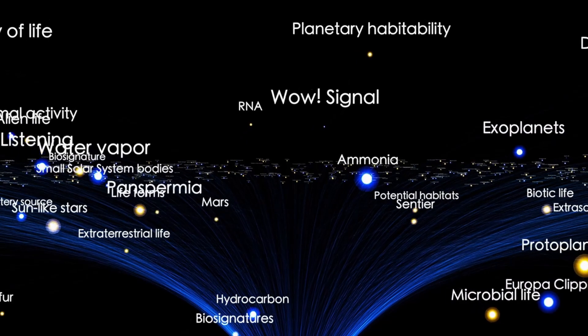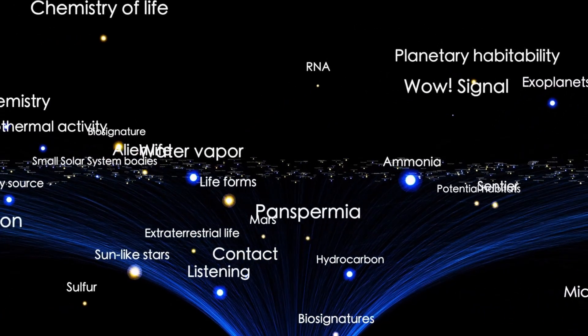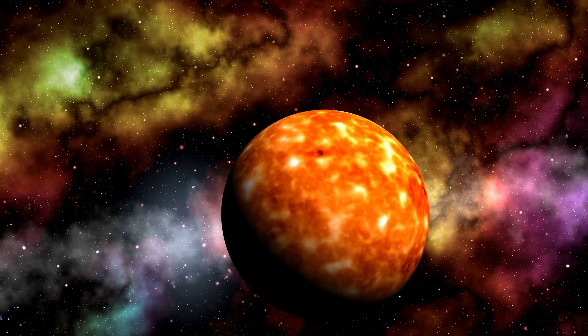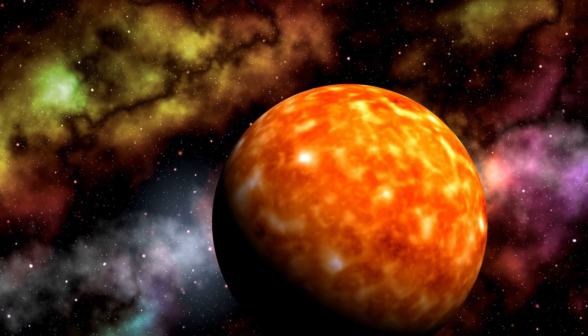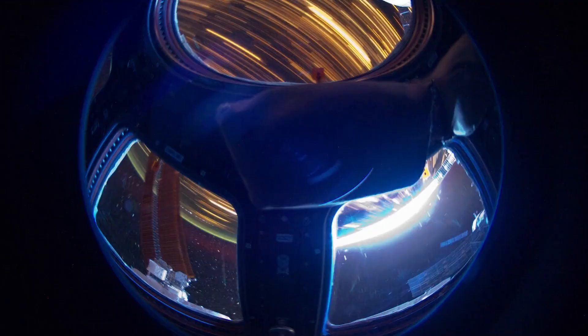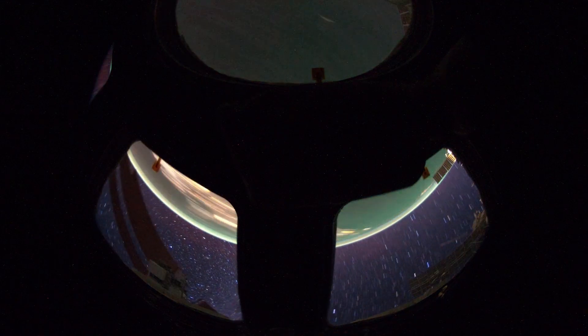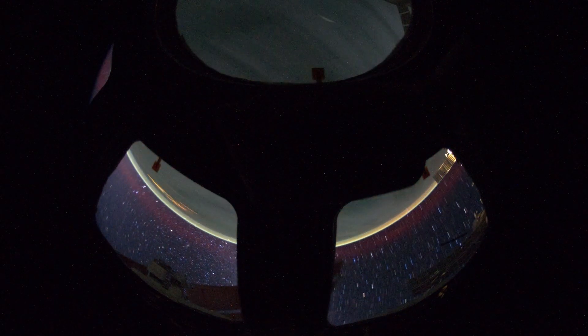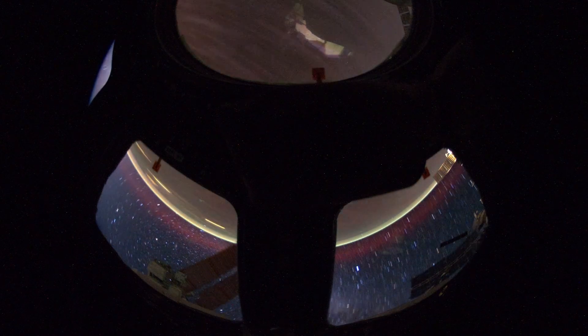One of Betelgeuse's most distinctive features is its deep red color, a result of its surface temperature being significantly cooler than the Sun's. While the Sun has a surface temperature of around 5,500 Kelvin, Betelgeuse's surface is about 3,500 Kelvin. This cooler temperature shifts its emitted light into the red part of the spectrum.